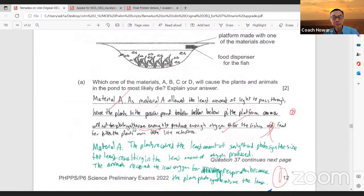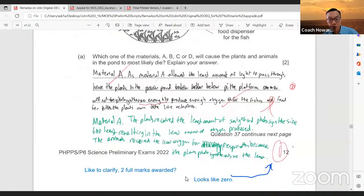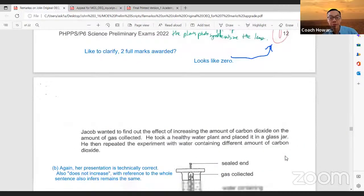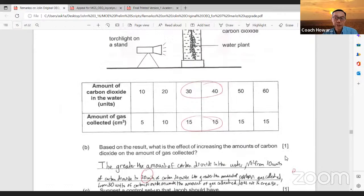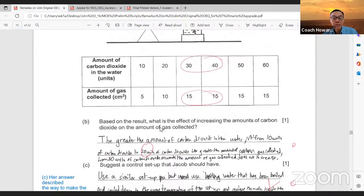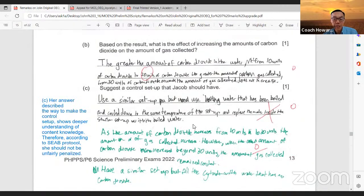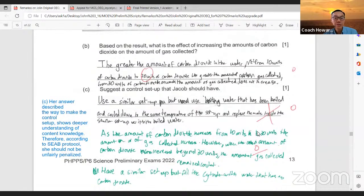In this question, her handwriting is indeed quite messy. I'm not sure whether the marker gave her two marks or zero marks. This is actually a mathematical question because maths also integrate with science. Based on the result, what is the effect of increasing the amounts of carbon dioxide on the amount of gas collected?